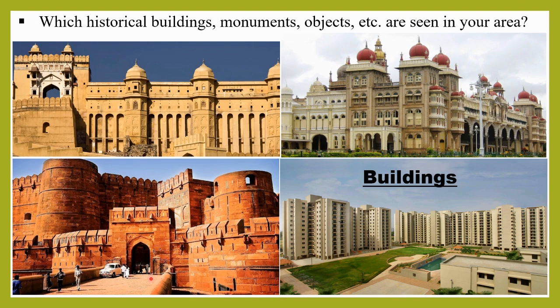Historical buildings, monuments and objects seen in your area — in a village, town or city — include buildings such as temples, caves, mosques, churches, memorials, forts, museums, etc. A place becomes known by these buildings; they tell us about the richness of the place and help us understand our history.